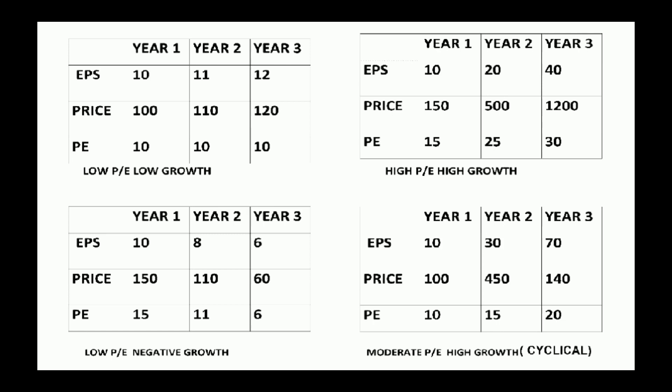The low-growth category is a slow-growing company. The second company type has high-speed PE growth. As the EPS is low, the price is high, and we compare the PE. This second company is down in the growth sector, while other companies have consistent growth.